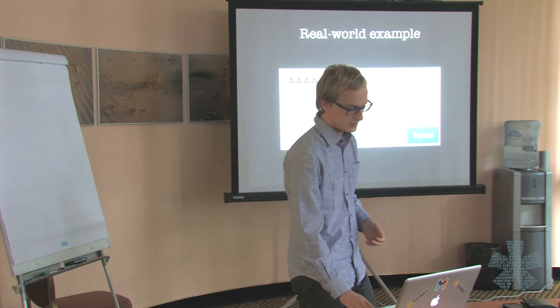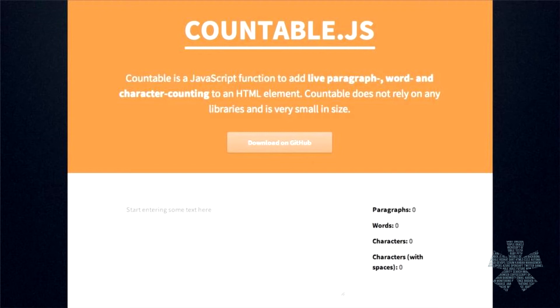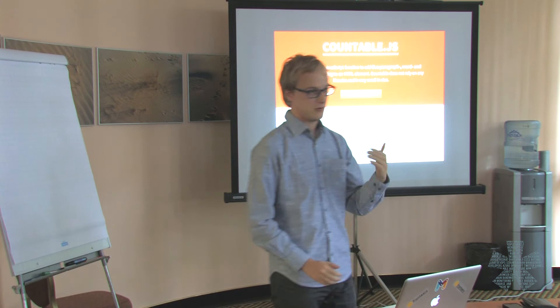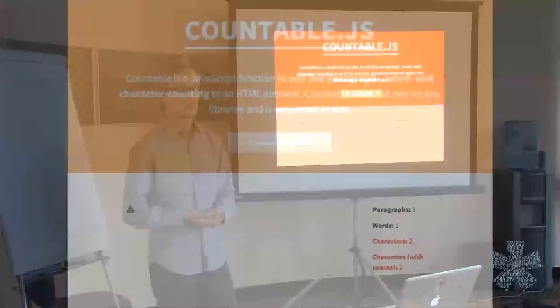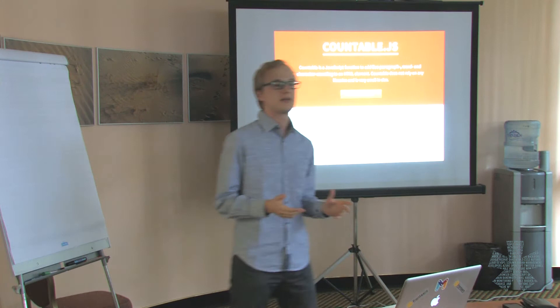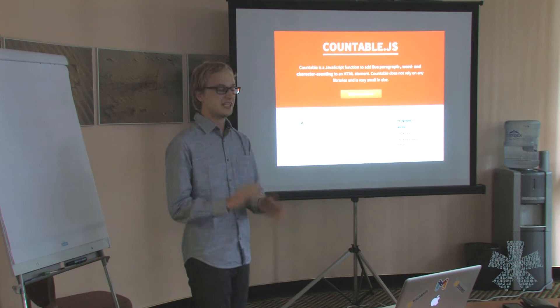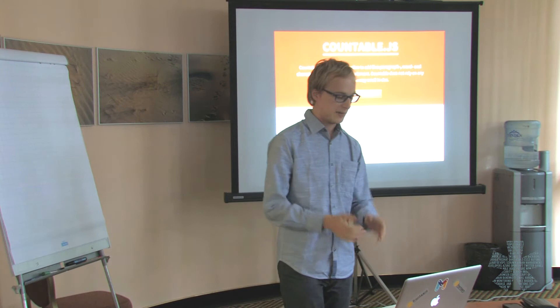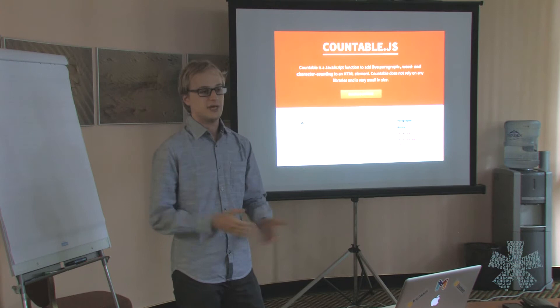Here's another example: the countable.js JavaScript library. It adds live paragraph, word, and character counting to any input field on your page. The first thing I did when I visited the demo page was apply the pile of poo test — I entered the pile of poo and it counted as two separate characters. So this is a very good idea: if you are writing a JavaScript library or doing anything with strings in JavaScript, just add a pile of poo to your unit test. It'll make sure your code actually supports astral symbols and therefore all of Unicode. I reported the bug to them and they've since fixed it.